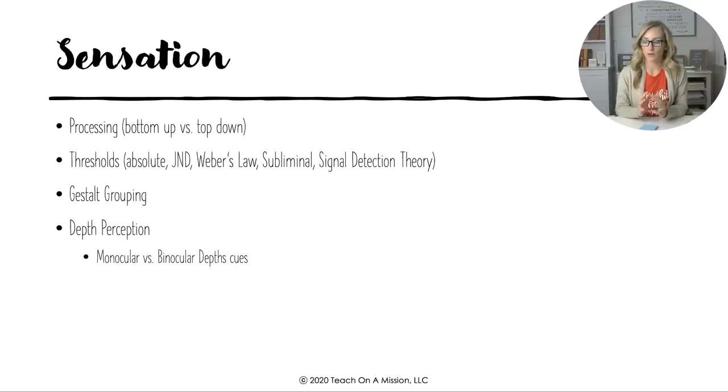We're going to go kind of quick through what I deemed intro to sensation. Understanding processing and how bottom-up processing means we are simply using our senses to make decisions about a new stimuli or thing that we see, whereas top-down is where we are using our experiences and our expectations, meaning our higher-order thinking brain to decipher and make decisions about a new thing.